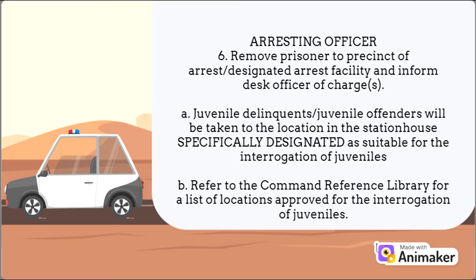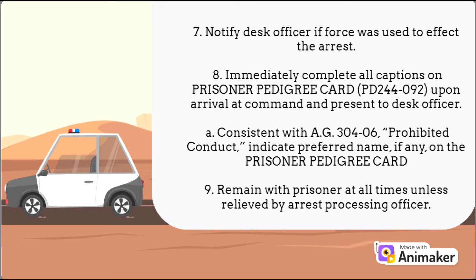Step 7: notify desk officer if force was used to effect the arrest. Step 8: immediately complete all captions on the prisoner pedigree card PD 244-092 upon arrival at command and present to desk officer. Consistent with AG 304-06, prohibited conduct, indicate preferred name if any on the prisoner pedigree card. Step 9: remain with prisoner at all times unless relieved by arrest processing officer.